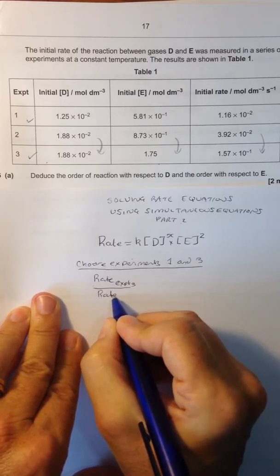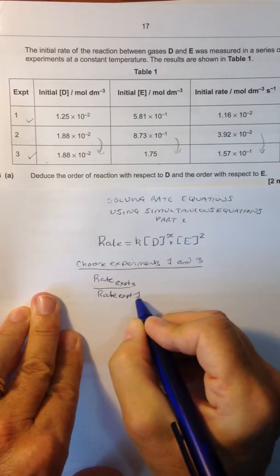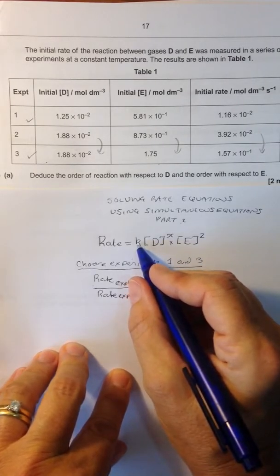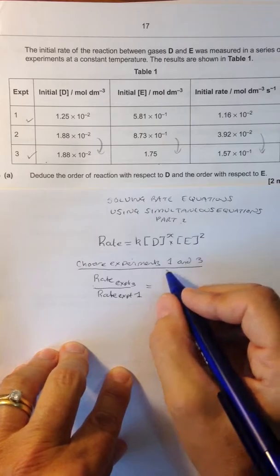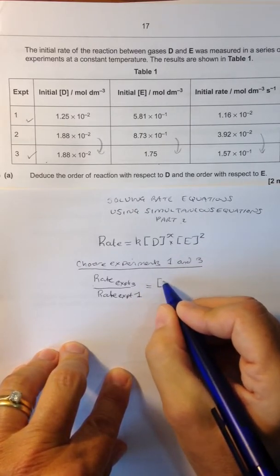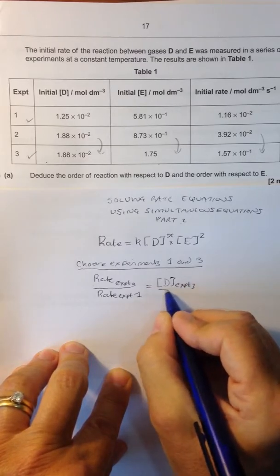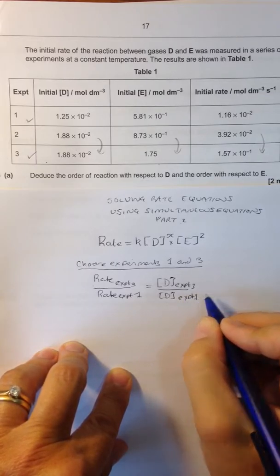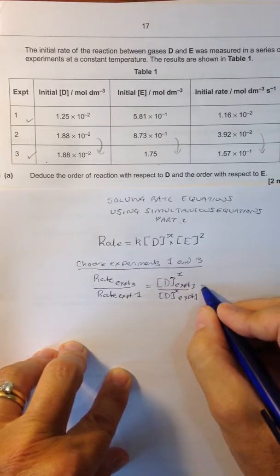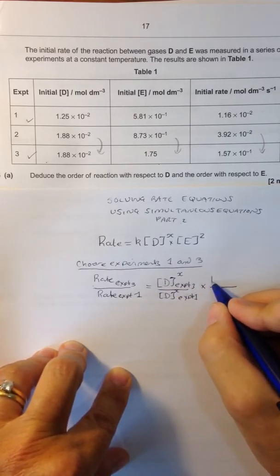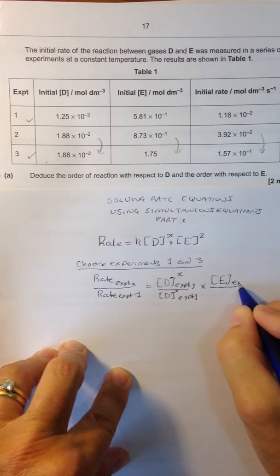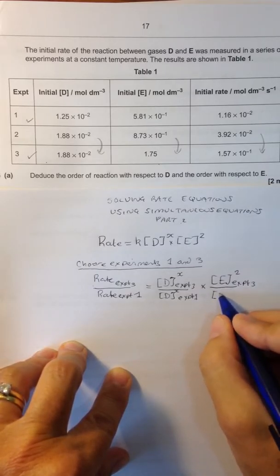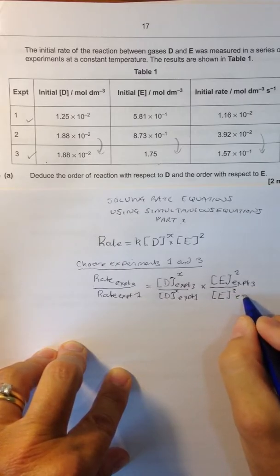Divided by the rate in experiment 1 is equal to the concentration of D. Remember, the rate constant cancels out. So the concentration of D in experiment 3 divided by the concentration of D in experiment 1. Don't know the order with respect to D yet, so we'll give that a value of X. Multiplied by the concentration of E in experiment 3, and we know that it's second order with respect to the concentration of E, divided by the concentration of E squared in experiment 1.